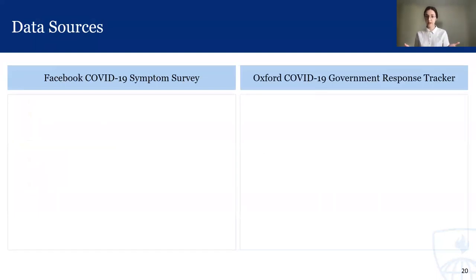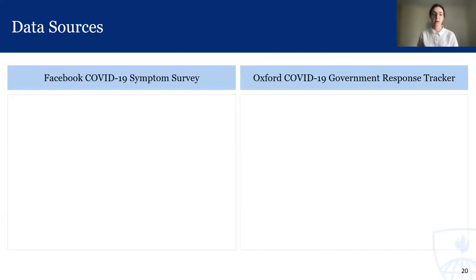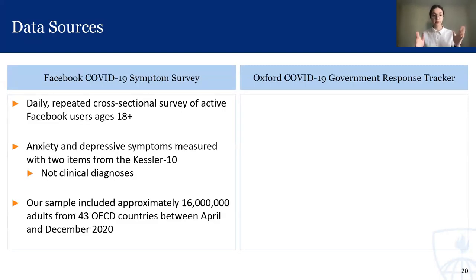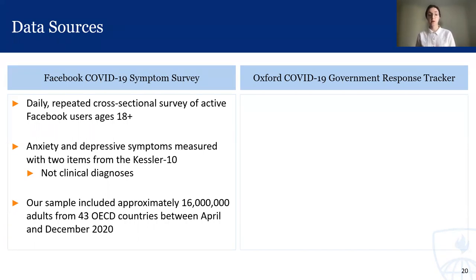With this study, we essentially joined two data sources. The first data source was the Facebook COVID-19 symptom survey, which Dr. Shattuck just gave a great overview of. We linked this individual-level data to country-level data from the Oxford COVID-19 government response tracker. The symptom survey is a daily repeated cross-sectional survey of active Facebook users ages 18 and older around the world — a huge sampling frame. Anxiety and depressive symptoms were measured with two items from the Kessler-10 scale, which measures mental distress. These are not clinical diagnoses — we're measuring symptoms here, which is different from measuring a clinical diagnosis of anxiety or depression. We included approximately 16 million people who were surveyed between April and December 2020 and resided in one of 43 different OECD countries.